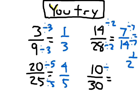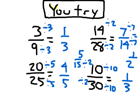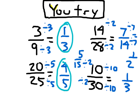Ten-thirtieths: did you divide by ten in the numerator and ten in the denominator? As long as you came to the simplest form of one-third, that's fine. You might have divided by two first to get five-fifteenths, but you'd need to recognize that's not in simplest form and divide by five again to get one-third. The answers in simplest form are one-half, one-third, four-fifths, and one-third.